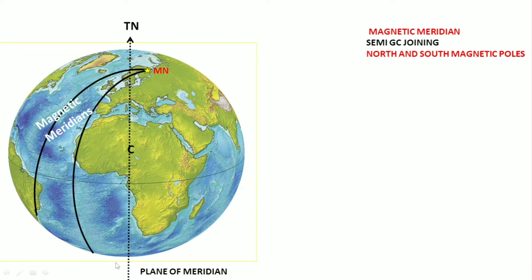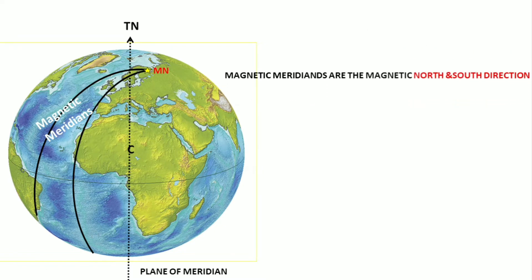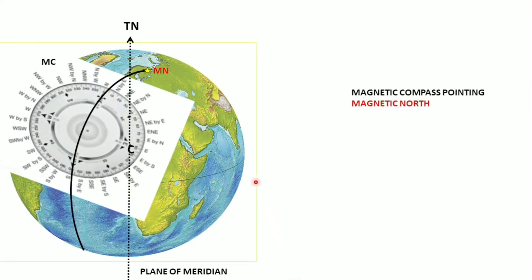Magnetic meridians are the true direction for magnetic north and south. They always point towards magnetic north and magnetic south, just like the meridians on the earth which point towards true north and true south. So when you suspend a magnet influenced only by earth's magnetism, it will be pointing towards the magnetic north — your magnetic meridian is the direction for magnetic north and south.